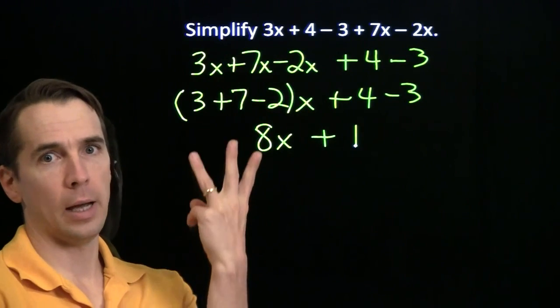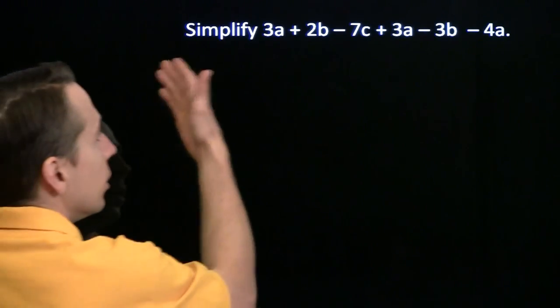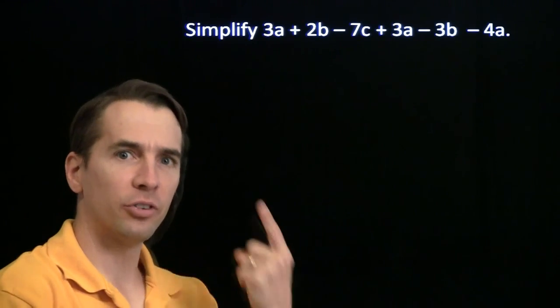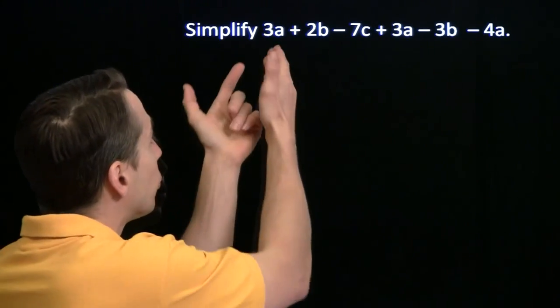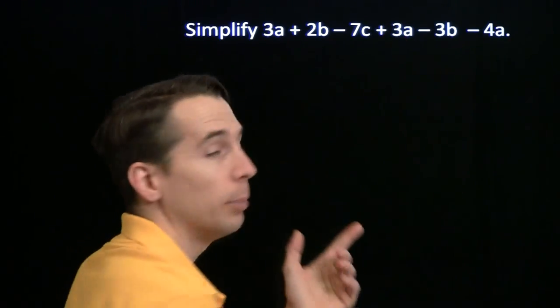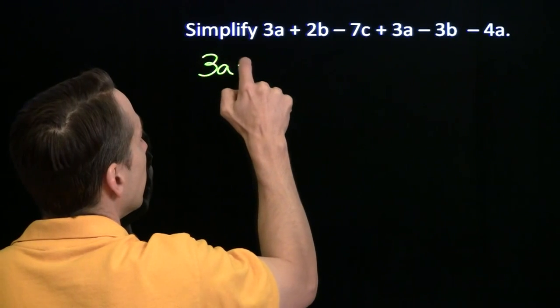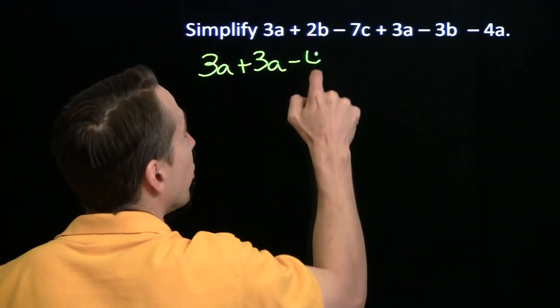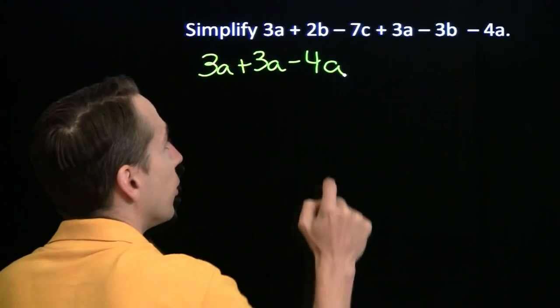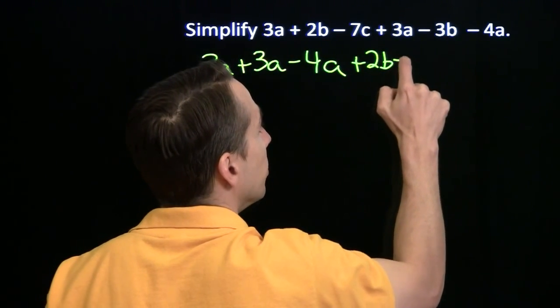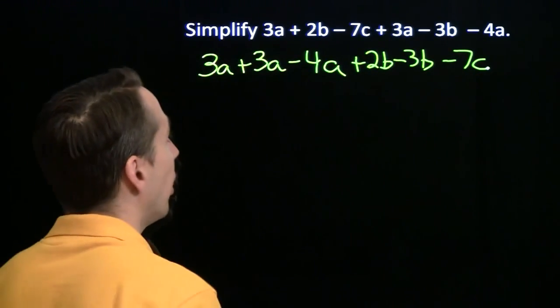What about 2 variables? How about 3? Let's try that. Here we've got a bunch of variables. We've got 3 variables now instead of just 1. But the game is the same. We're going to group the like terms. We're going to bring the 3a, the 3a, and the minus 4a together. And then we're going to do the same thing with the b terms. We're going to bring 2b together with the minus 3b. And then the minus 7c is off here by itself.